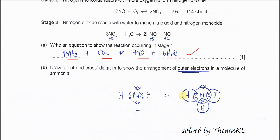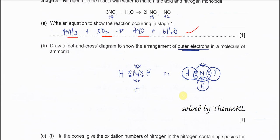Part B: Draw a dot-and-cross diagram for the arrangement of outer electrons only in the molecule of ammonia. So ammonia we know is NH3.